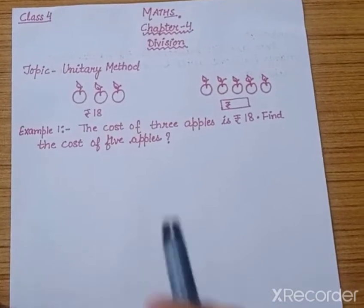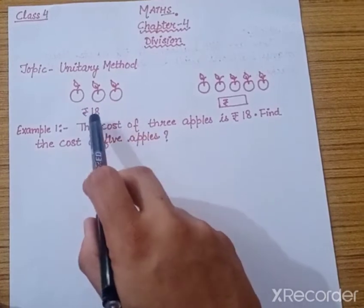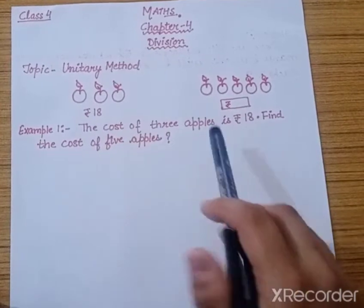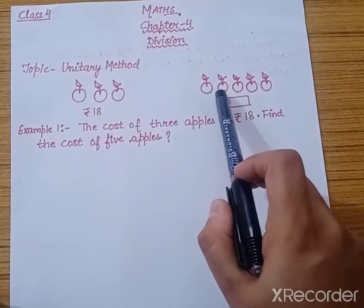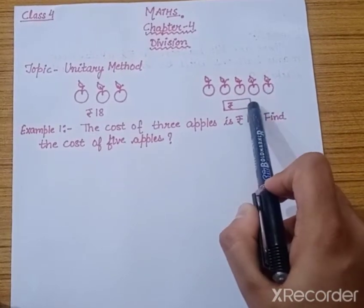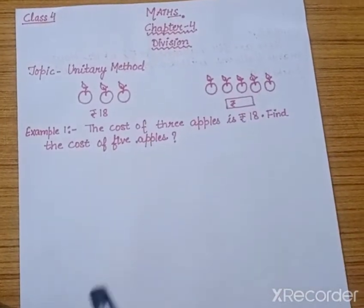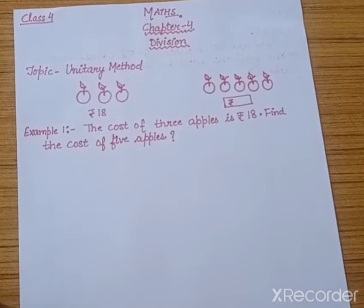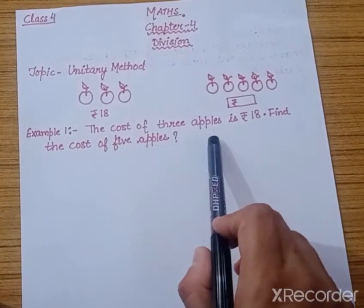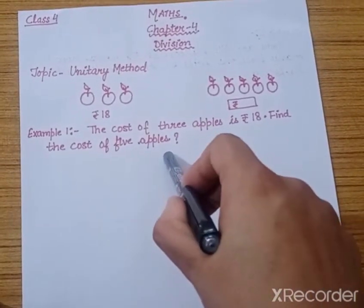If you see, there are three apples and the cost of those three apples is rupees 18. Now we have five more apples. They are asking us to find the cost of five apples. We will find it out with the help of the Unitary Method. The cost of three apples is rupees 18. Find the cost of five apples.